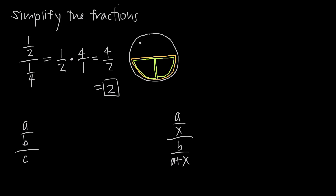So we can do it visually or algebraically, and we get an answer of 2. Now if we apply that to problems with variables, here we have a over b divided by c. So we have our larger fraction, and inside it we have a fraction in the numerator and then just a single value in the denominator.